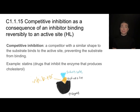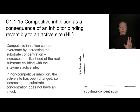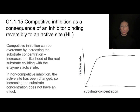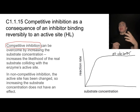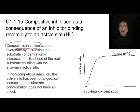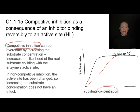Let's look at how these influence reaction rates differently. Without any inhibitor, increasing substrate concentration increases the reaction rate until a maximum rate is reached. If a competitive inhibitor is added, the rate starts slower because the inhibitor competes with the substrate for the active site. However, as substrate concentration increases, the real substrate can eventually outcompete the inhibitor — it becomes more likely to collide with the active site. So competitive inhibition can be reversed by increasing substrate concentration.